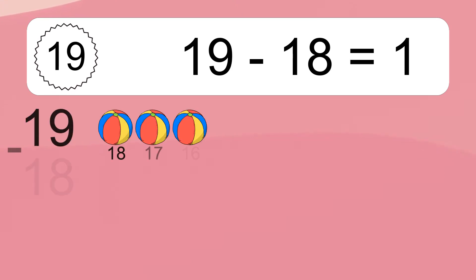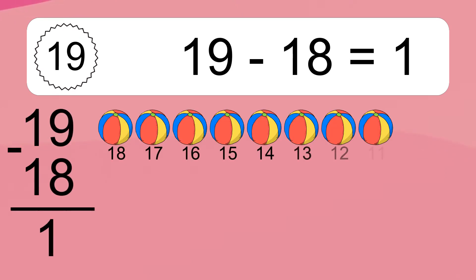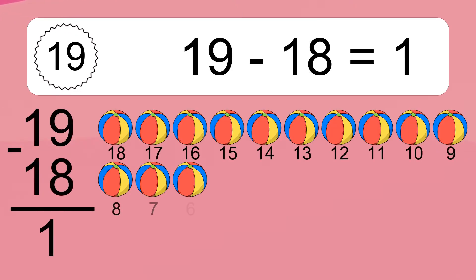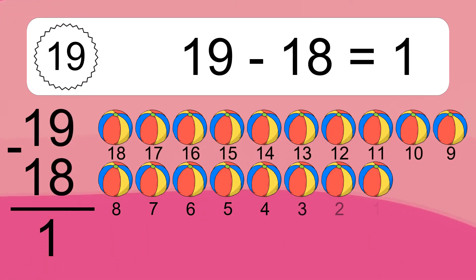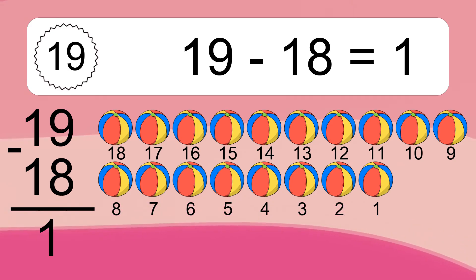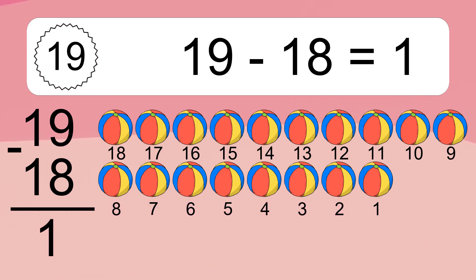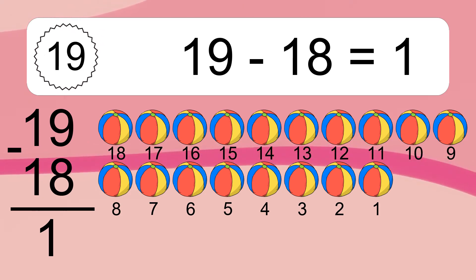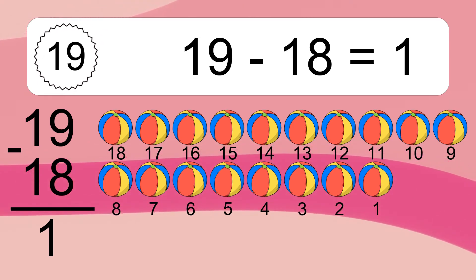19 minus 18 equals what? 19 minus 18 equals 1. Let's count it. 18, 17, 16, 15, 14, 13, 12, 11, 10, 9, 8, 7.